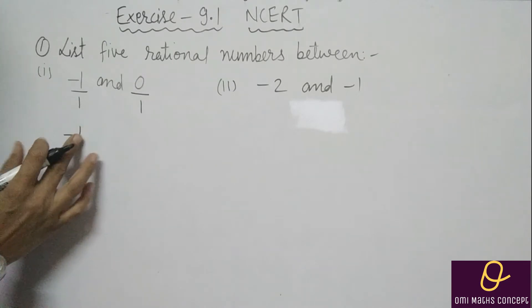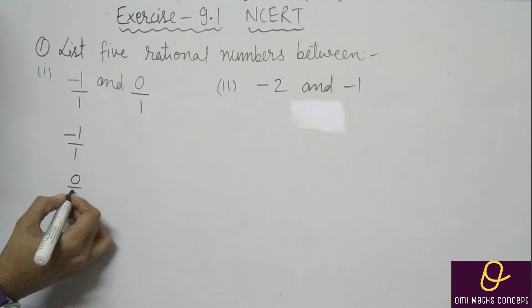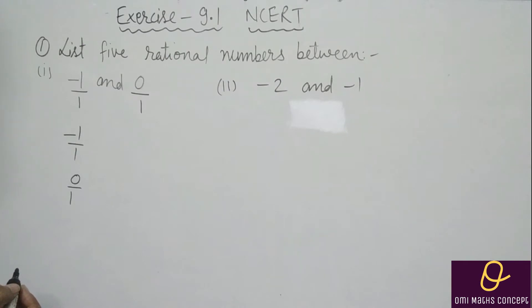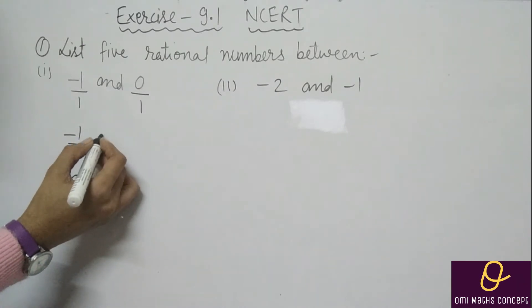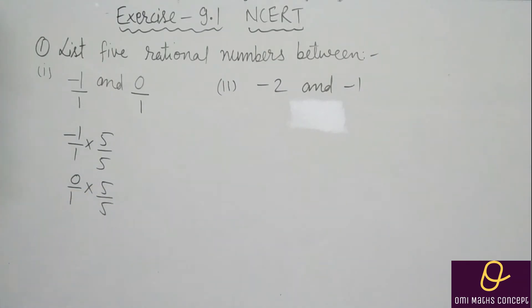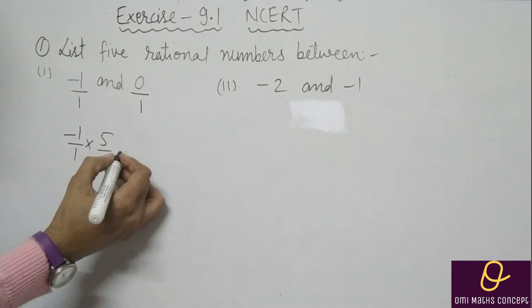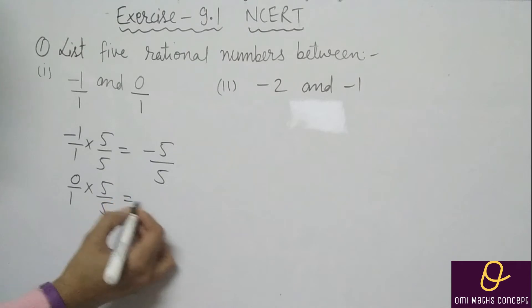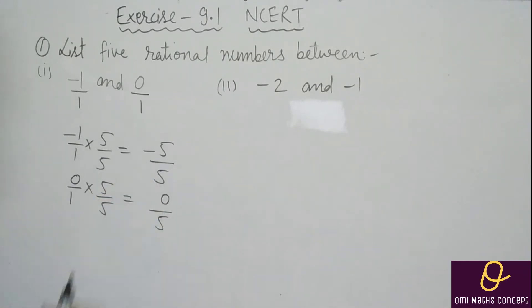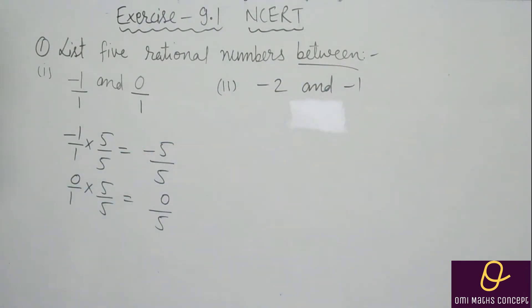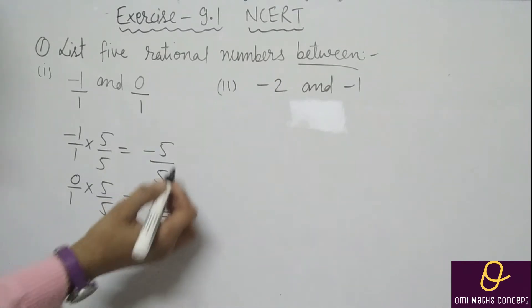Ab, isme kya karna hai? Minus one by one aur zero by one — in dono mein aapko multiply karna hai kisi bhi ek number se. Jaise multiply ki hai na five se. Same number hona chahiye. Aapse puchha hai five rational numbers, toh aap koshish karo ki ek number extra lo. Ek baar mein batati hoon aapko: minus one ko five se kiya toh minus five by five, aur zero ko five se kiya toh zero by five.